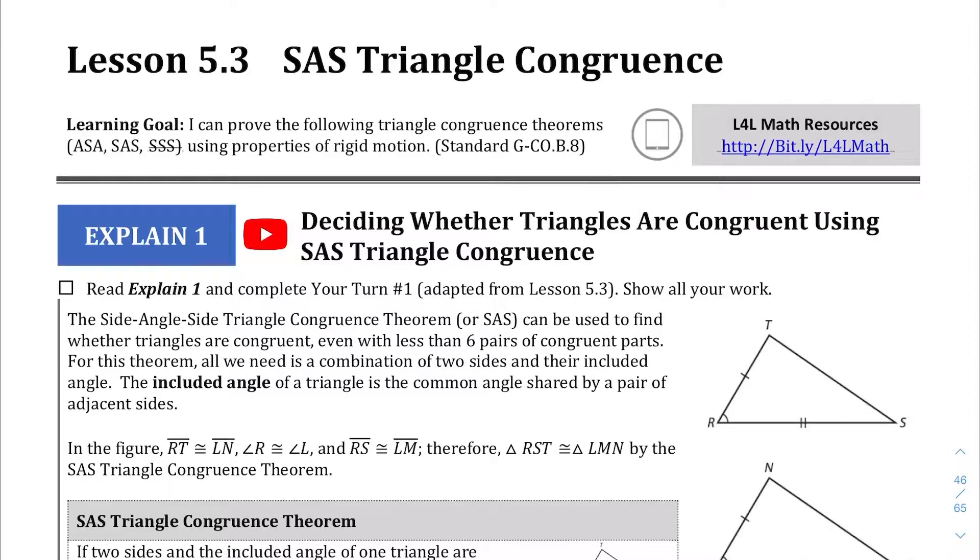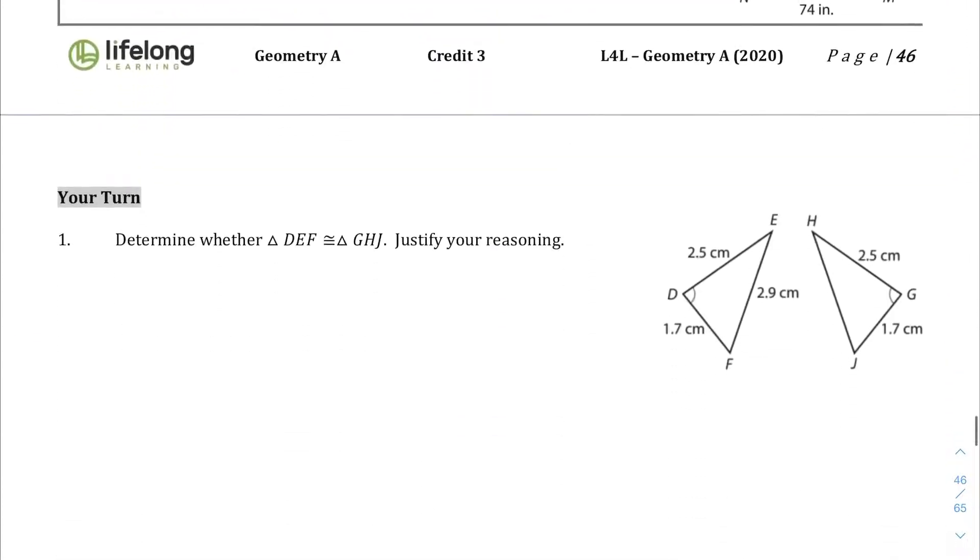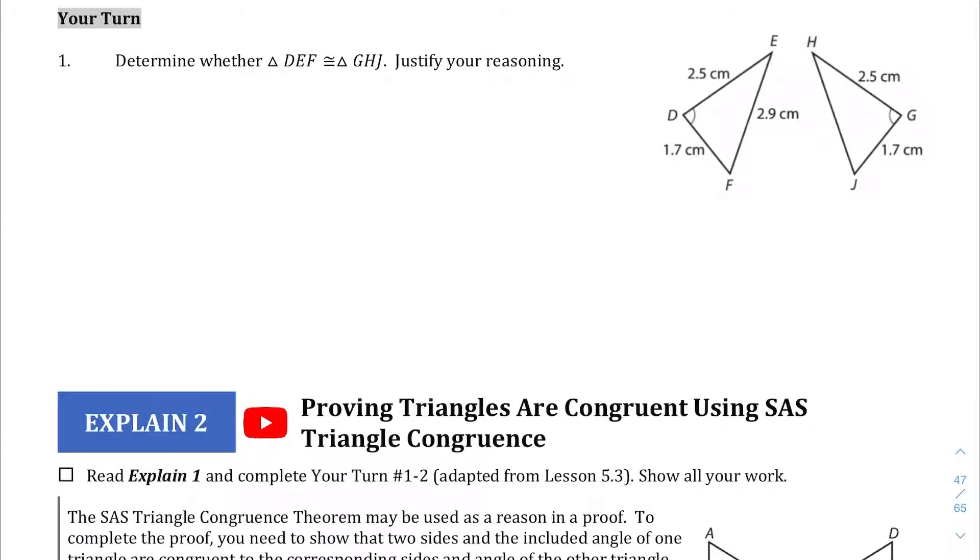So go ahead and read the Explain 1 and all that if you want. We're going to jump into the Your Turn question here, because I'm going to assume that you read it and you kind of have a pretty good grasp of what's going on here. And let's test our knowledge looking at the Your Turn section. We are asked to determine whether triangle DEF is congruent to triangle GHJ and to justify our reasoning.